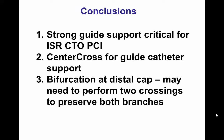In summary, for canalizing in-stent restenosis, having strong guide support can be very useful, especially since in-stent CTOs can have very calcified and hard-to-penetrate proximal caps. In this particular case, the CenterCross support catheter gave very strong support, allowing us to penetrate the proximal cap with a Confianza Pro-12 guide wire and achieve further crossing using various guide wires and microcatheters.